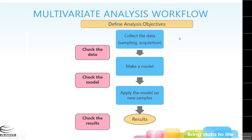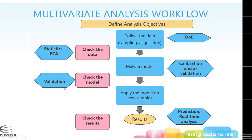This is a general workflow for multivariate data analysis. You collect your data and make sure your acquisition isn't adding extra noise. Then you check your data, take a look at it, build your model — whether classification or regression — and then check and validate your model to ensure it's internally and externally consistent. Then you apply it to new samples using your validation statistics to express confidence, and once you have your model, you can move forward and replace your previous methods.